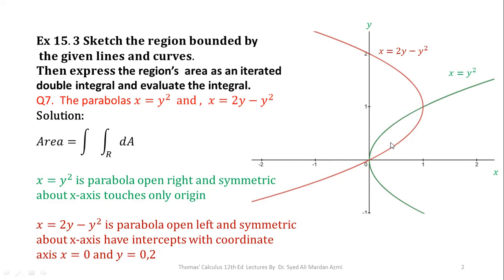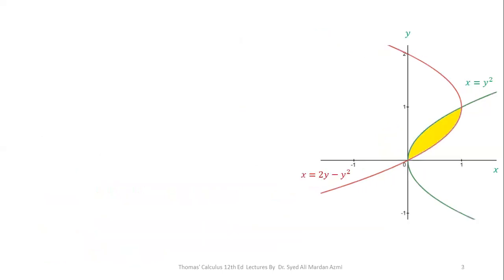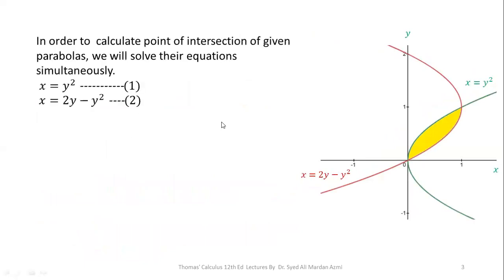We will now highlight the region of integration and calculate the points of intersection of the two parabolas. One point of intersection is clearly the origin, but we need to calculate the accurate value of the second point of intersection. For this purpose, we will solve the equations of the parabolas simultaneously.